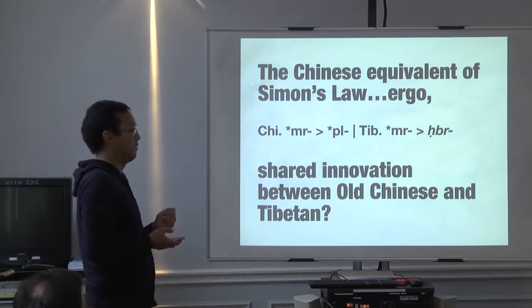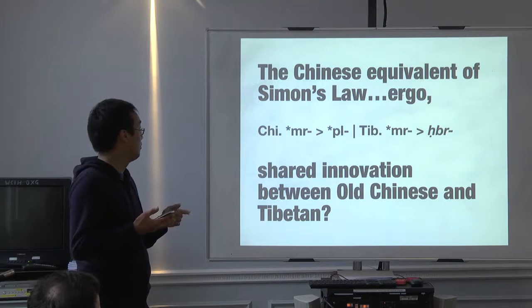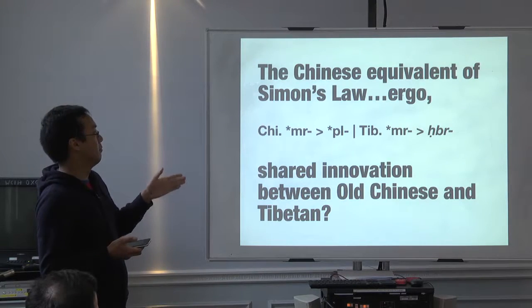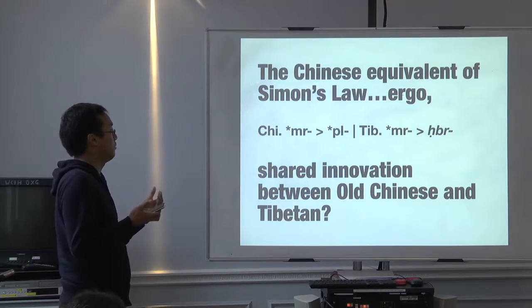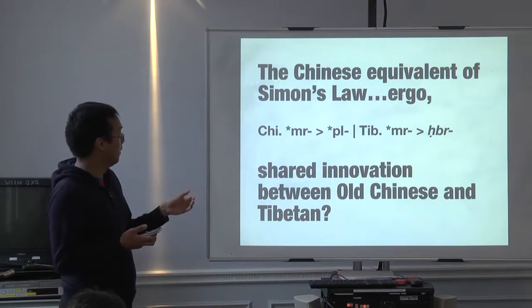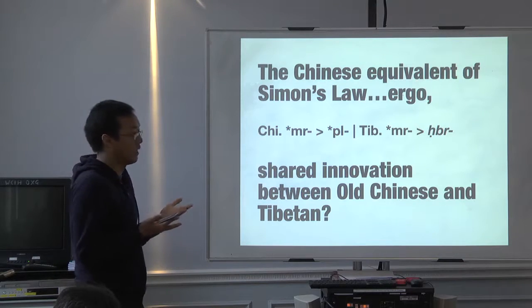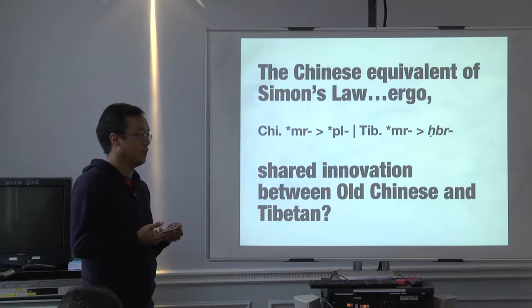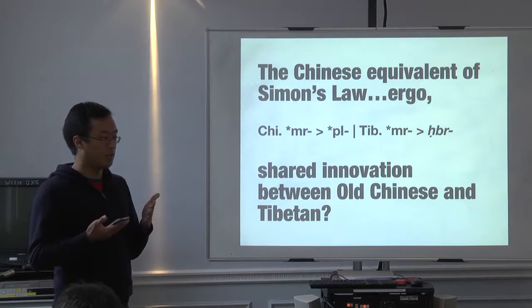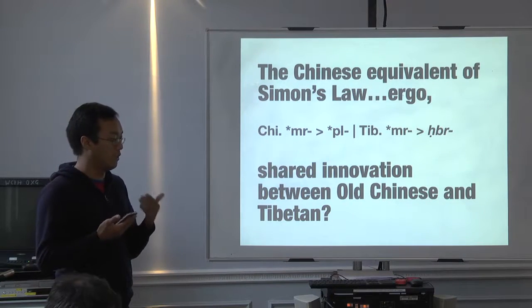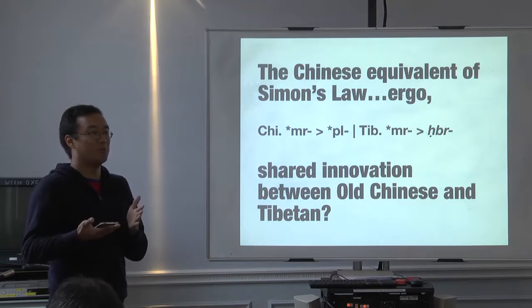This is not on the handout — I wrote it last evening. There are sound laws at play: Moon's Law, for example, states that Pre-Tibetan mr leads to br. If this sound change from mr to br to bl is treated as the same or a similar sound change, it would mean that Old Chinese Sinitic and Tibetan share the same sound law — a shared innovation — which would make them related to each other.